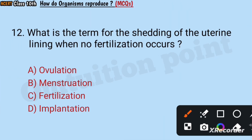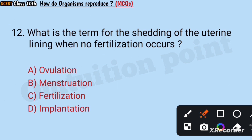Question number 12: What is the term for the shedding of the uterine lining when no fertilization occurs? Ovulation, menstruation, fertilization, or implantation? Answer: Menstruation.